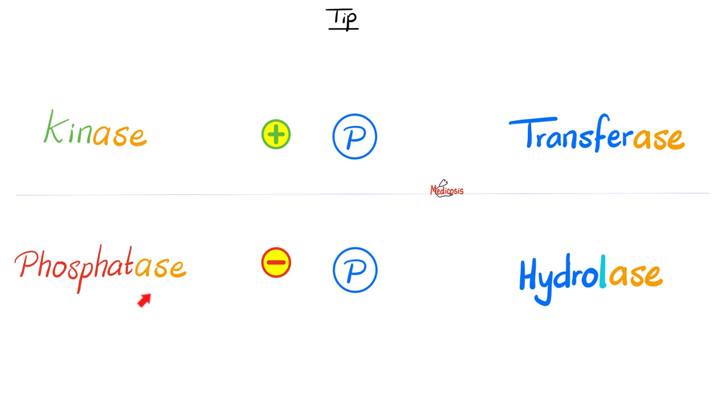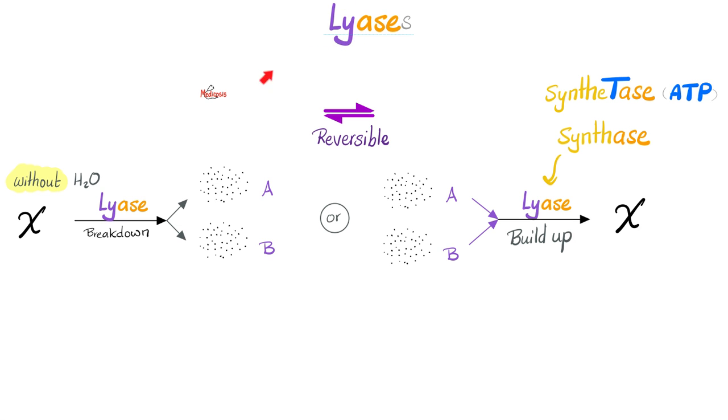What's a lyase then? A lyase is something that breaks down but in the absence of water, unlike the hydrolase. Lyase goes both ways. So I can break down X into A and B, or I can bind A and B together to give you X again. Lyase goes both ways. It's a reversible reaction. Oh, by the way, when I use lyase to build up here, you can call it something else. You can call it synthase. And if you need ATP for the reaction, we can call it synthetase. The T is for the adenosine triphosphate.